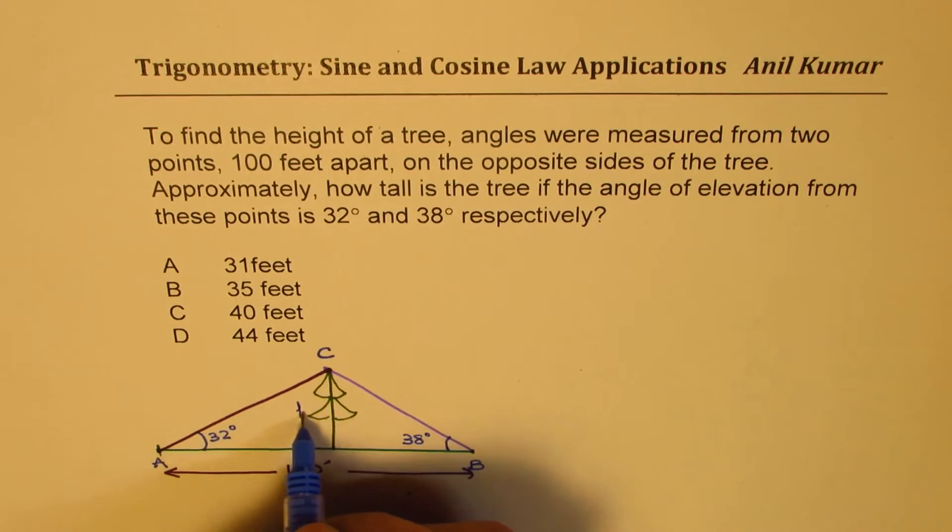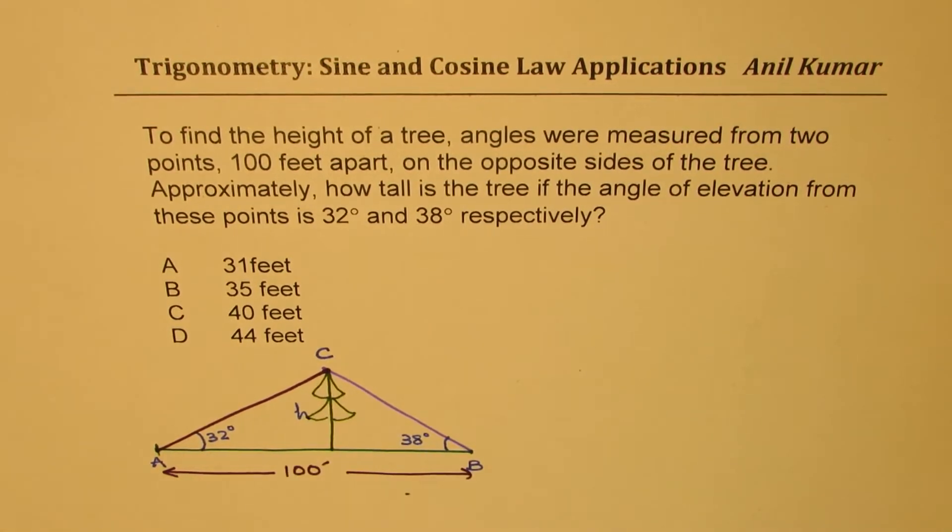We need to find the height of the tree. You can always pause the video, answer this question, and then look into my suggestions. Now such questions—those of you who have not done sine and cosine law—can treat two right triangles and solve using tan ratios. That is one possibility. Split them into two right triangles and use tan ratios.